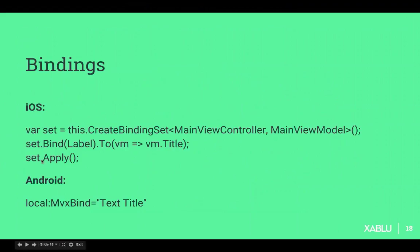Bindings are a big thing in MVVM and in MvvmCross, and it's really easy to add them. For iOS, you can make a new binding set and bind, for example, a label to your Title property on the view model, then apply it afterwards. Android is even easier — you just say local:MvxBind Text Title. If you want to know which bindings are all available, you can go to the mvvmcross.com website. There's, for example, Text, Click, Visible, and all those convenient bindings available.